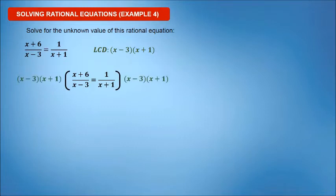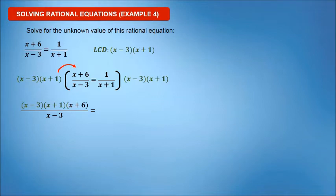Multiply the LCD to both sides of the equation. The left side will become: x minus 3, times x plus 1, times x plus 6, all over x minus 3.